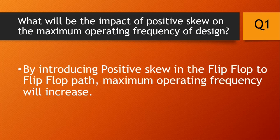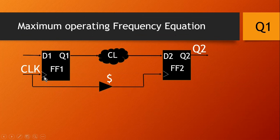By introducing positive skew in the flip-flop to flip-flop path, maximum operating frequency will increase. Let us see what will be the equation for maximum operating frequency in the presence of positive skew. Positive skew means: if a capturing edge flip-flop receives a delayed version of clock with respect to the launching edge flip-flop, then this type of delay is called positive skew.